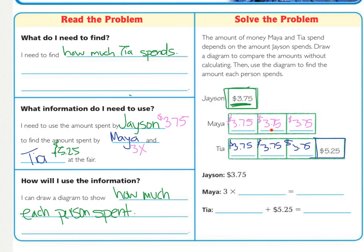Maya is three groups of $3.75. So, solve that. So, Maya spent $11.25. So, now we can figure out our actual answer of Tia. We take $11.25 and then add $5.25 to that. So, your final answer to be written at the bottom is $16.50.